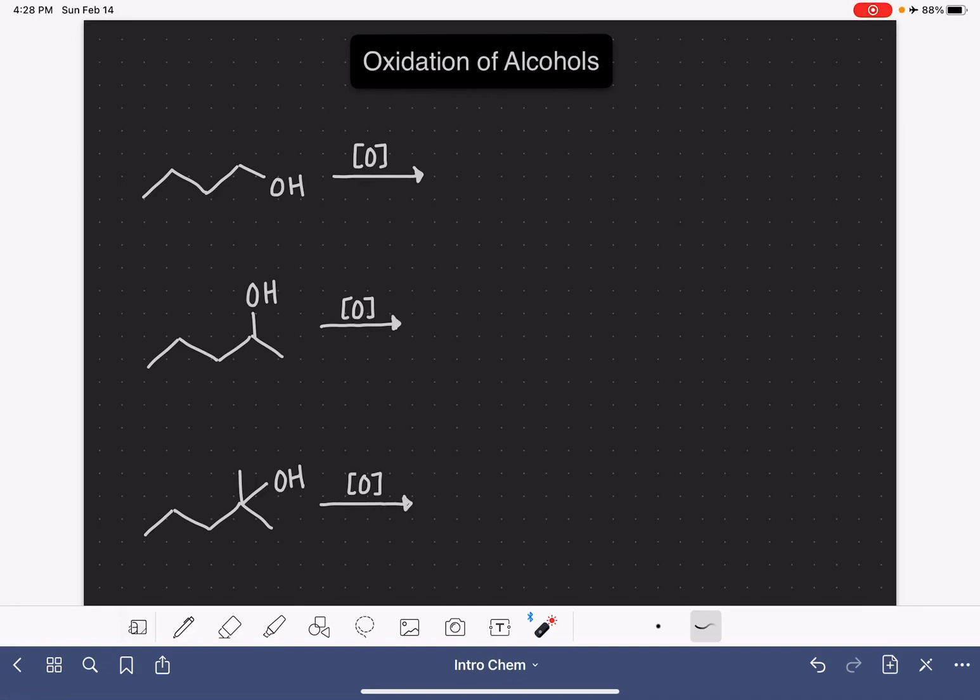Alcohols undergo a type of reaction called oxidation. This reaction uses a reagent that we refer to as an oxidizing agent, and many times we just abbreviate oxidizing agent by putting a capital O in square brackets on top of the reaction arrow.